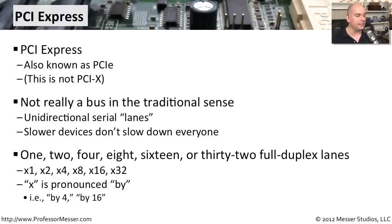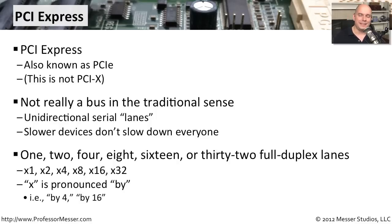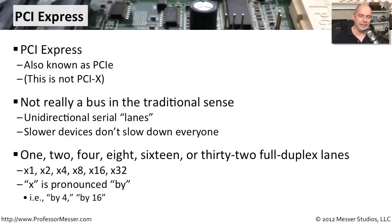You'll see the lanes written as x1, x2, x4 — the x here is pronounced 'by.' So you'll see a by-1, a by-4, a by-16, and a lot of different interfaces, and they all have different sizes as well. It's sometimes very easy to pick out the difference between a by-1 interface and a by-16 interface.